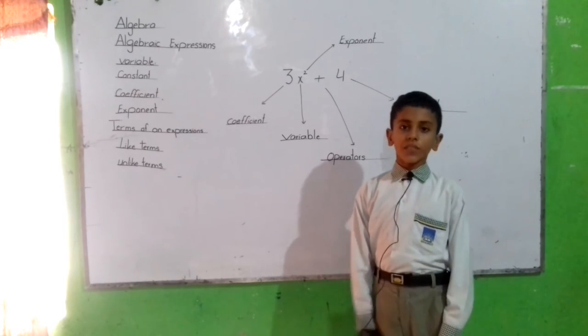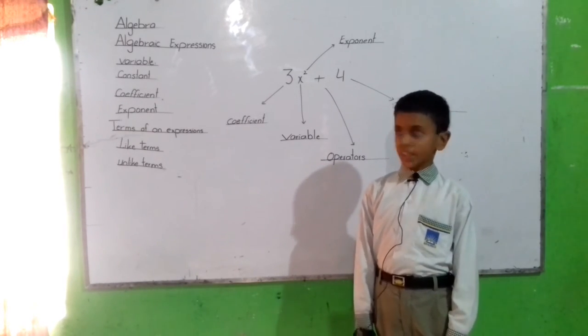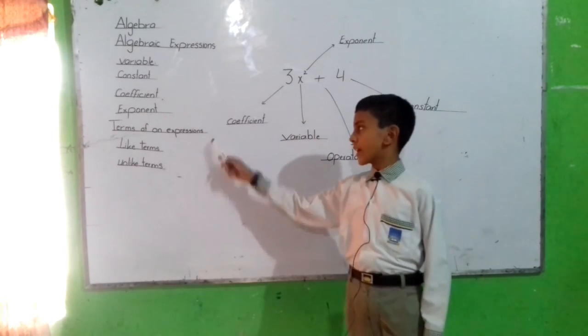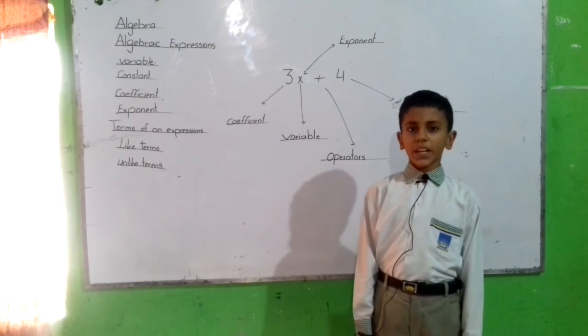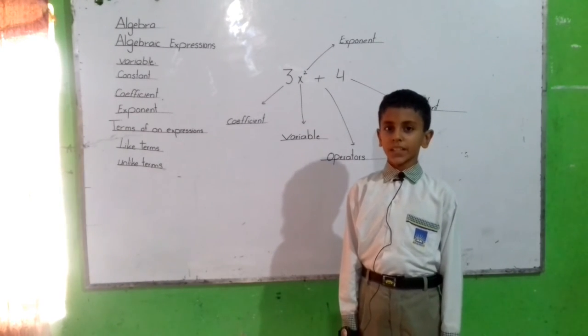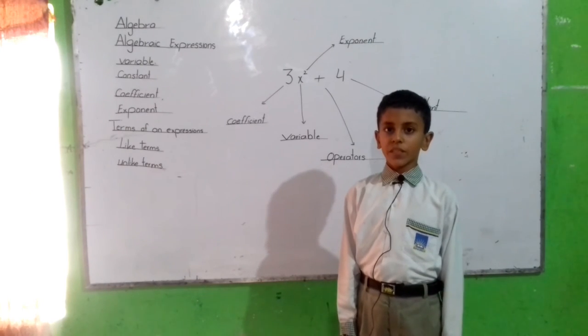Exponent. Terms of an expression. As a bright expression, the variable is the number which are separated by operators are called Terms of an Expression.